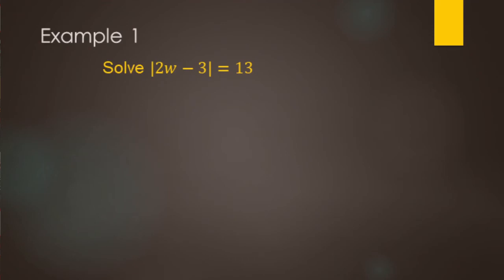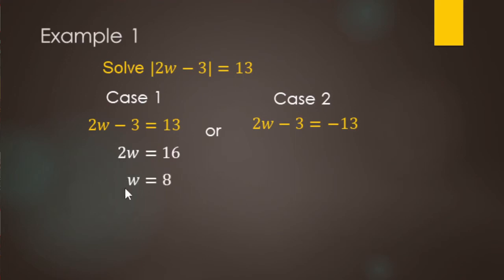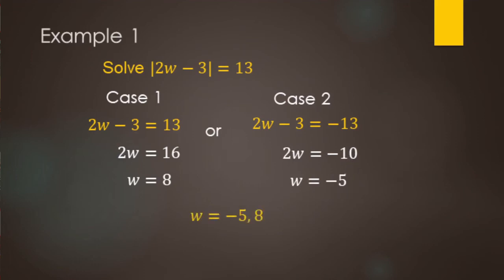Go ahead and pause and try this one out. We have |2w - 3| = 13. We break it into two cases. Case 1: 2w minus 3 equals 13 — add 3 to get 2w equals 16, divide by 2, so w equals 8. Case 2: 2w minus 3 equals negative 13 — add 3 to get 2w equals negative 10, divide by 2, so w equals negative 5. Our two solutions are negative 5 and 8.